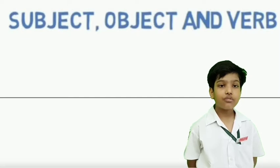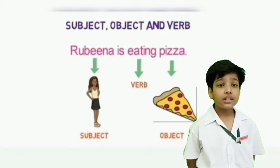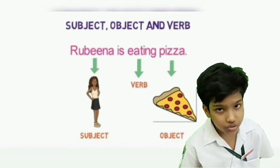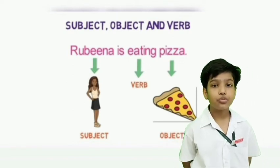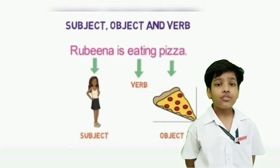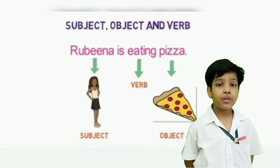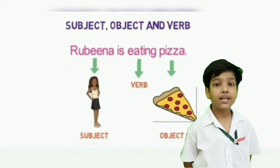For better understanding of the topic, it is essential to understand subject, object and verb. Let us understand with the help of an example: Rubina is eating a pizza. Here, who is the doer of the action? Rubina. So Rubina is the subject. What is she doing? Eating. So eating is the verb. What is she eating, or who is receiving the action? Pizza. So pizza is the object.